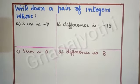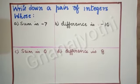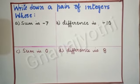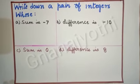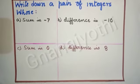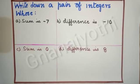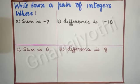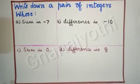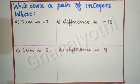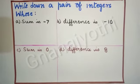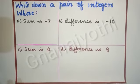Dear children, I have taught how to multiply the signatures. So let us recall once. Plus into plus is equal to plus. Plus into minus is equal to minus. Minus into plus is equal to minus. And minus into minus is equal to plus.